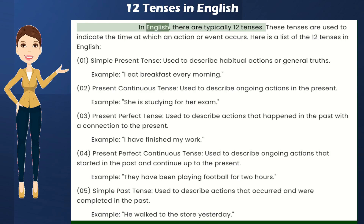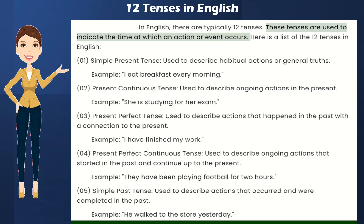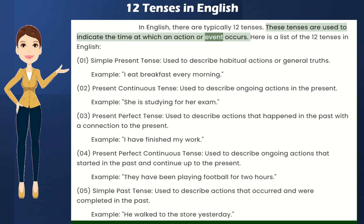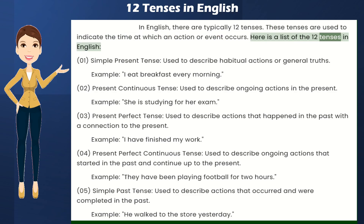In English, there are typically 12 tenses. These tenses are used to indicate the time at which an action or event occurs. Here is a list of the 12 tenses in English.